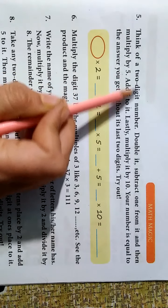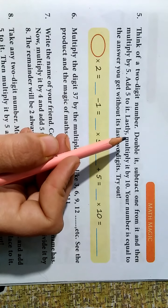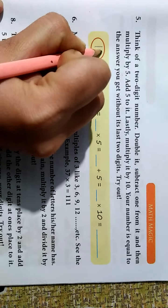Next question. Think of a two digit number. Aapne two digit ka koi number soch lo. Malaria ten. Lekh diya ten.